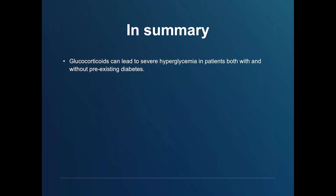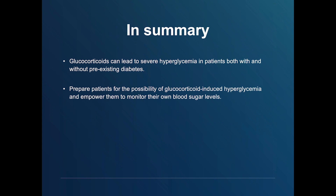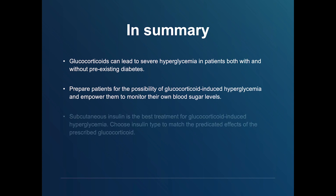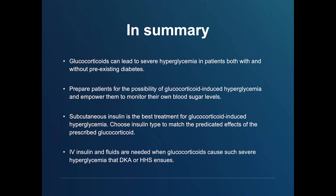In summary, glucocorticoids can lead to severe hyperglycemia in patients both with and without pre-existing diabetes. Prepare patients for the possibility of glucocorticoid-induced hyperglycemia and empower them to monitor their own blood sugar levels. Subcutaneous insulin is the best treatment; choose insulin type to match the predicted effects of the prescribed glucocorticoid. Intravenous insulin and fluids are needed when glucocorticoids cause such severe hyperglycemia that diabetic ketoacidosis or a hyperglycemic hyperosmolar state ensues.